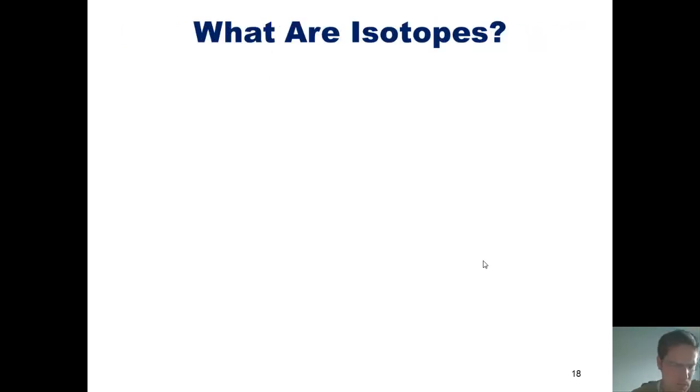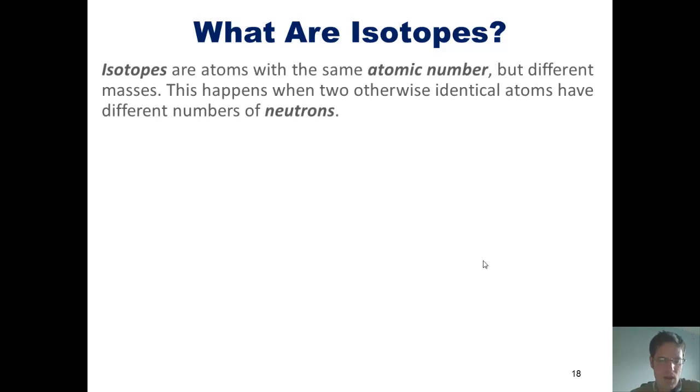And what are isotopes? Simply put, they are atoms with the same atomic number but different masses. This happens when two otherwise identical atoms have different numbers of neutrons.